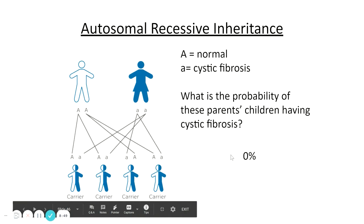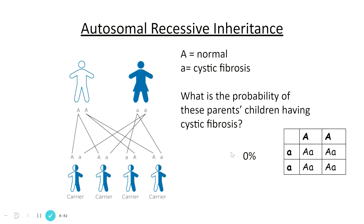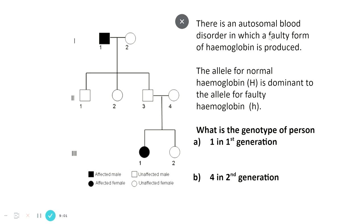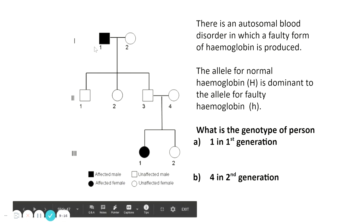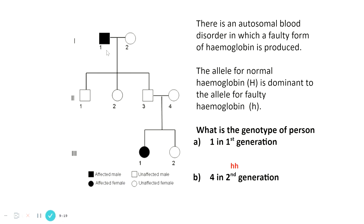Another example describes an autosomal blood disorder where a faulty form of haemoglobin is produced, and the allele for normal haemoglobin is dominant. What is the genotype of person one in the first generation? As an affected male, they must be homozygous recessive: little h, little h. For person four in the second generation, they produced a child who is affected, so they must carry a faulty allele; but since they don't have the condition, they must also have a healthy allele — so they're big H, little h.